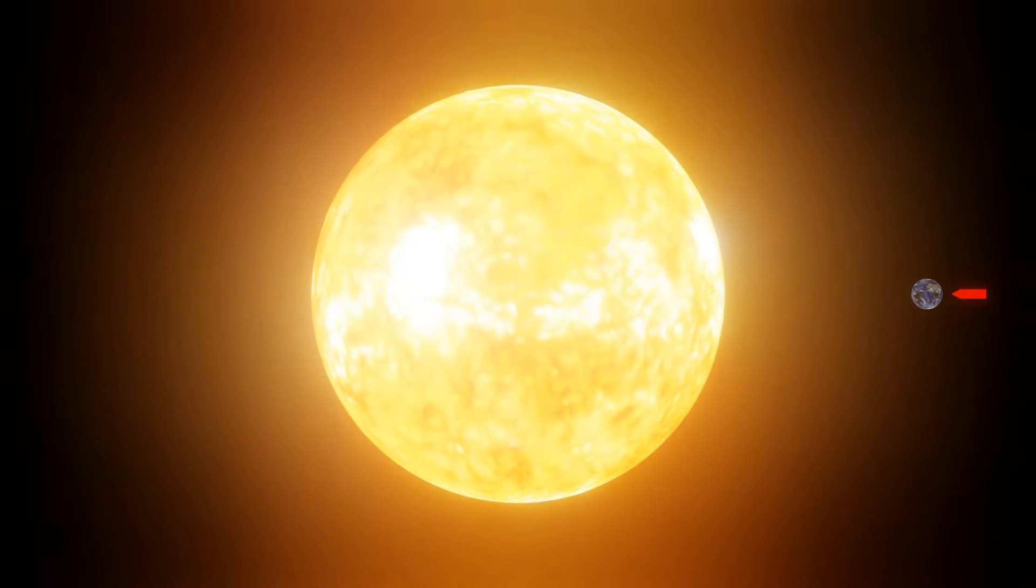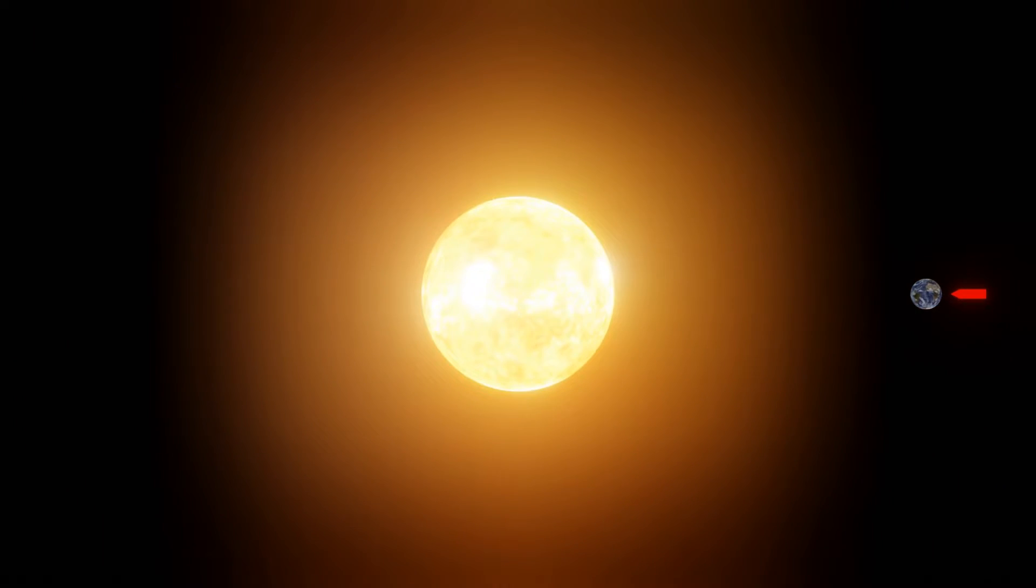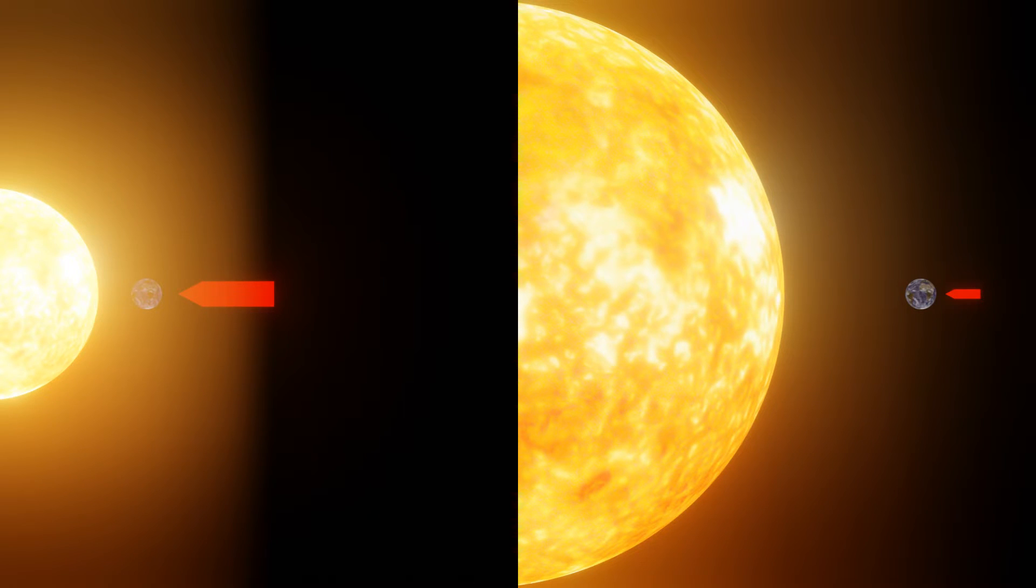Now shrink the Sun down while keeping its mass. This allows the Earth to get a lot closer to the Sun's center of mass, increasing gravitational influence, while the mass of the Sun never changed.